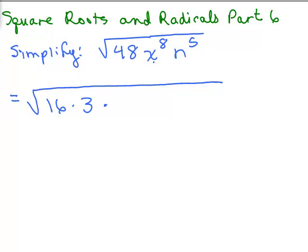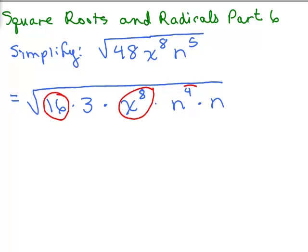This will be the quickest way to do it. x to the 8th is a perfect square because it has an even exponent. n to the 5th has an odd exponent, so I need to write it as n to the 4th times n. So we have square root of 16, square root of x to the 8th, square root of n to the 4th — we can pull those out as a 4, an x to the 4th, and an n squared.